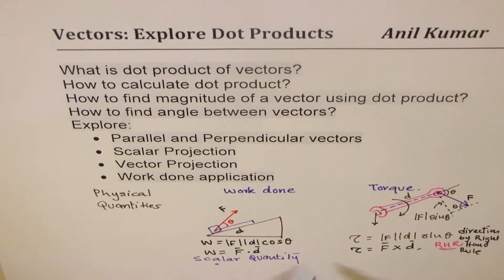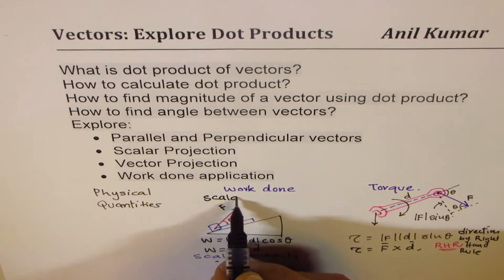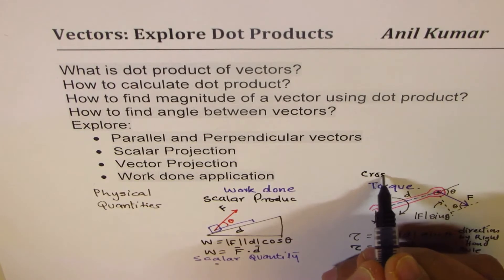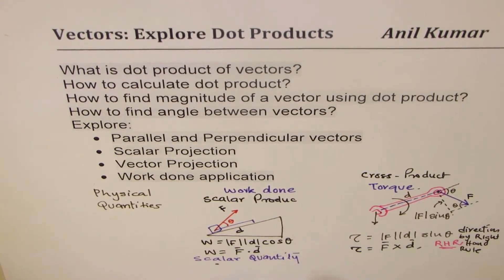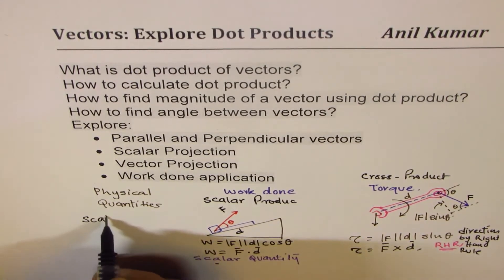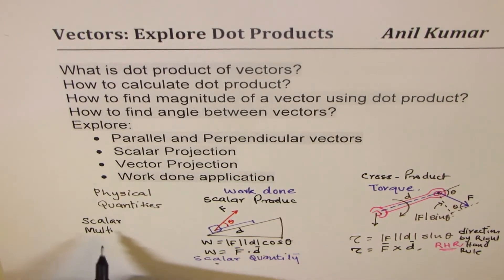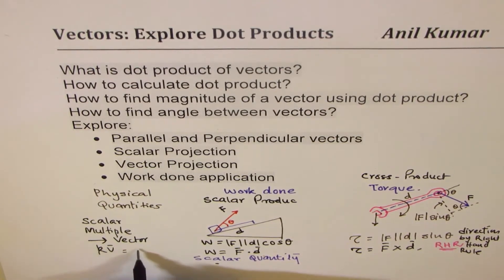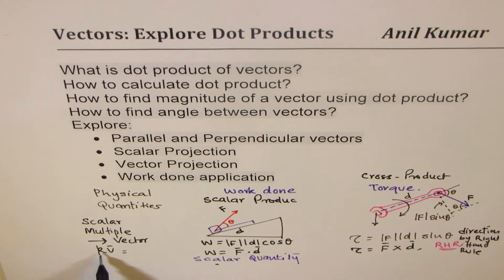We have two types of products: one is the dot product, also called the scalar product, since the output is scalar; and the other is the cross product. In this set of videos we'll explore the dot product along with its applications. You should not confuse this with a scalar multiple — a scalar multiple results in a vector: k times a vector v is still a vector, just multiplied by scalar k.